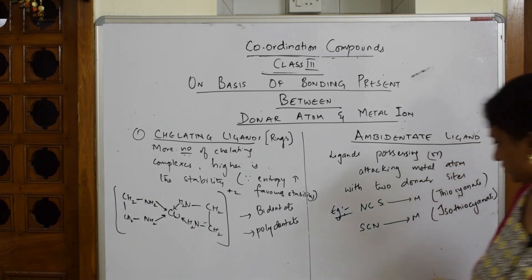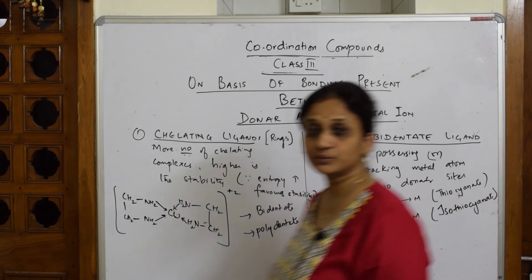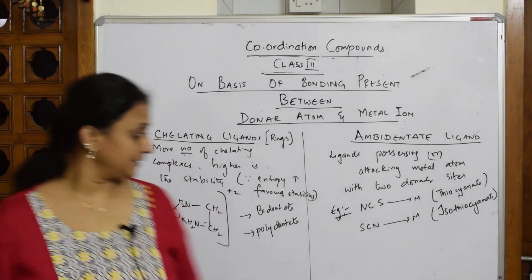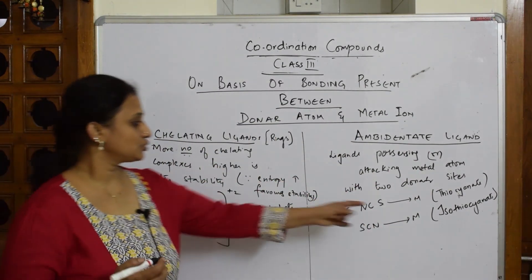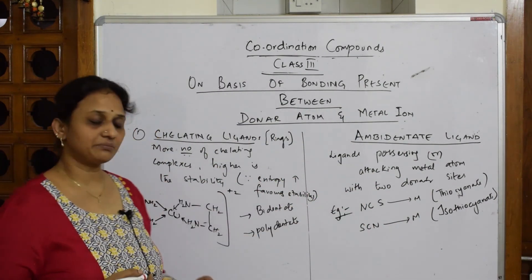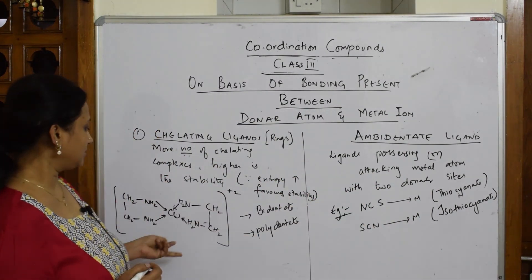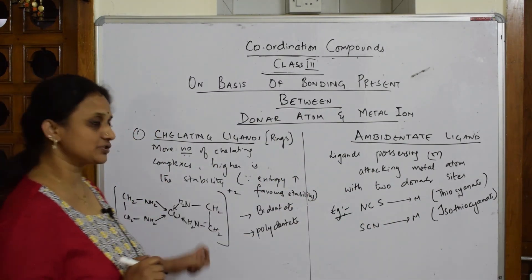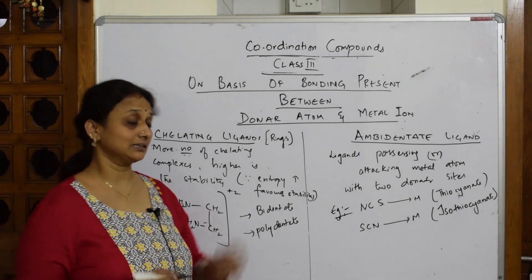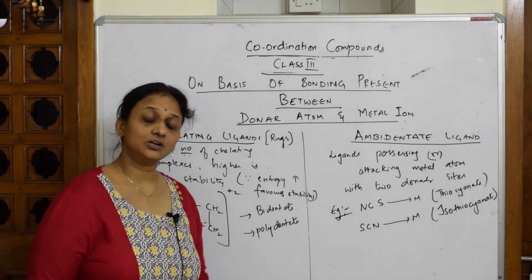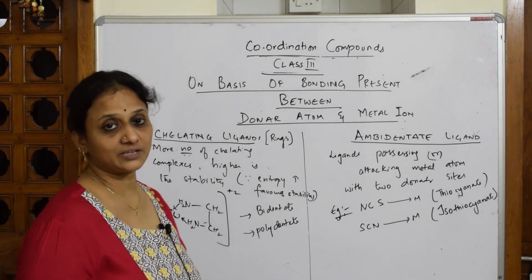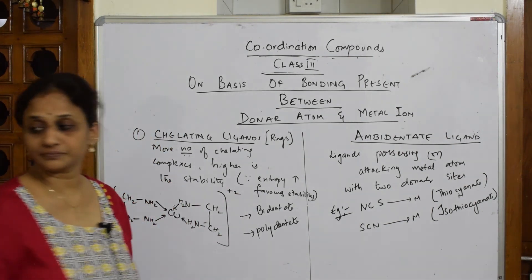This is how you can see two bonding sides from the same ligand, where it forms bridges or links with the metal atom. This is the third category or third class of classification of ligands.